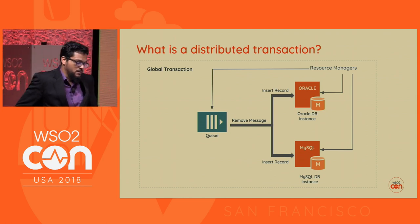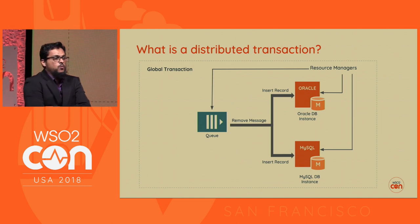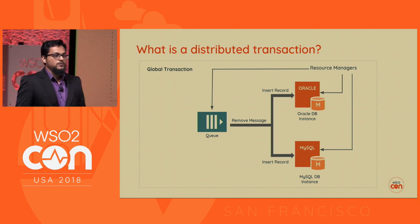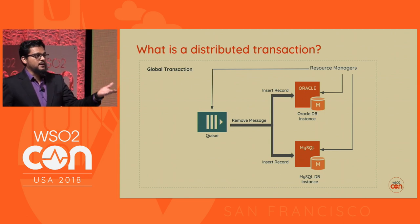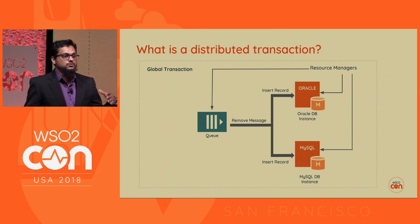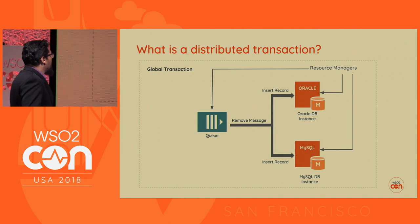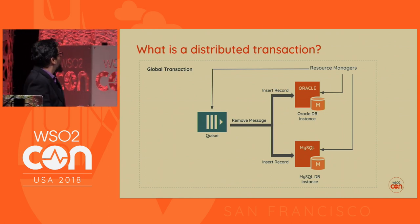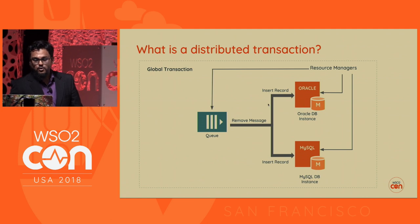Before going into transactions with microservices, let's look at what a distributed transaction is. We are familiar with XA transactions. Let's say you need to credit an account and then debit an account within a single transaction, and these two involve two different databases. You need to somehow tie these together within a single global transaction.